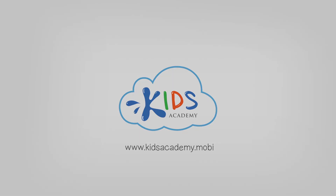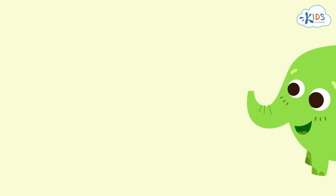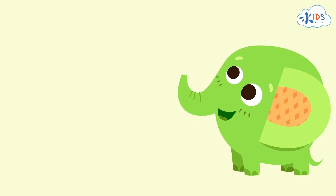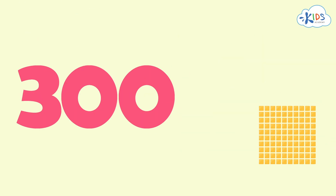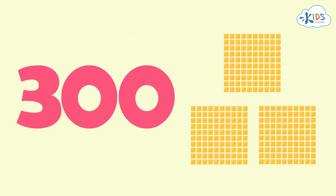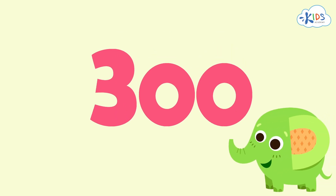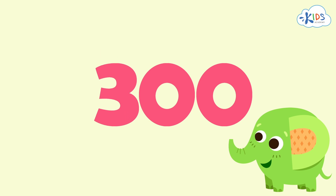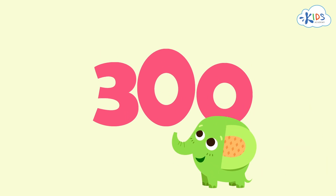Welcome to Kids Academy! When we look at a number like 300, only the 3 in the hundreds place has any value. There is a 0 in the ones place and a 0 in the tens place.